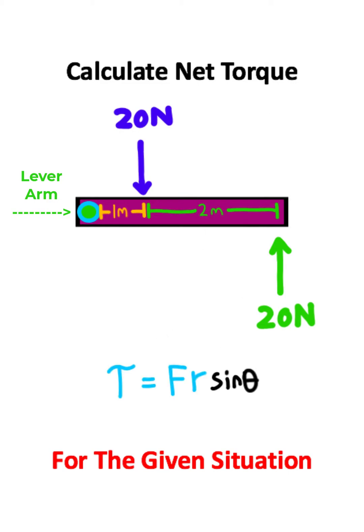Now the equation for torque is force times distance from the lever arm multiplied by the sine of your angle between your force and displacement from the lever arm.